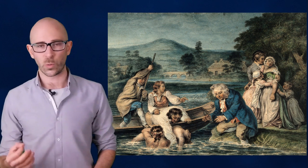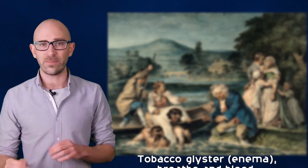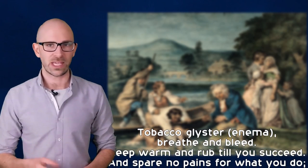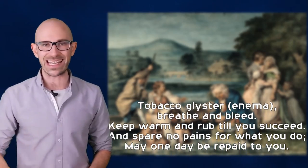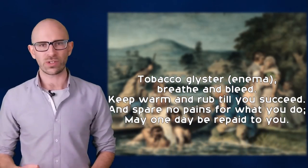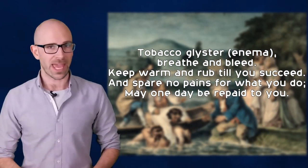Artificial respiration was used if the tobacco enema did not successfully revive them. In order that other people could easily remember what to do in these cases, in 1774, Dr. Halston published a helpful little rhyme: 'Tobacco glyster breath and bleed, keep warm and rub till you succeed, and spare no pains for what you do may one day be repaid to you.'